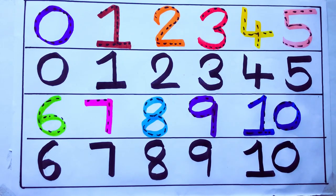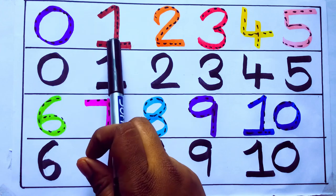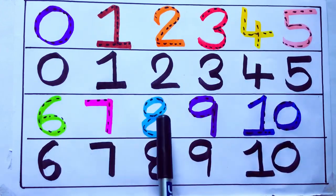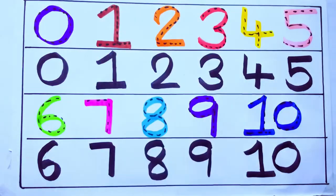1 second learning numbers: 0, 1, 2, 3, 4, 5, 6, 7, 8, 9, 10. Okay, bye kids.